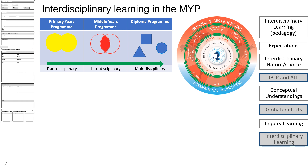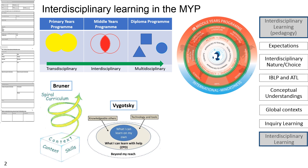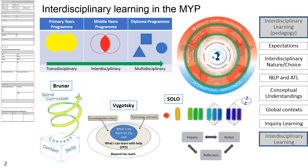As you can see from the MYP program model, the learner profile is at the core, followed by the concepts, ATLs and global context, then by action, service, personal and community projects. These are common areas of interaction for interdisciplinary learning to take place, even beyond the IDU. We should be familiar with the pedagogical underpinnings that support IB education. The Bruner Spiral Curriculum and Vygotsky's Zone of Proximal Development are theories that value prior knowledge, affirmed attendance and extended learning. The SOLO taxonomy — structure of observed learning outcomes — aligns with the students' inquiry cycle as they progress from unistructural, multi-structural, relational, to extended abstract. Using SOLO as a reflection tool helps students to evaluate their own progress and choose appropriate next steps, knowing that making interdisciplinary connections leads to better and deeper understanding.